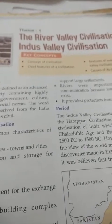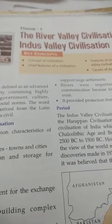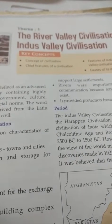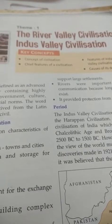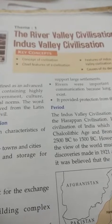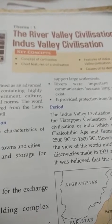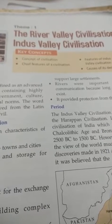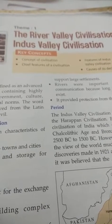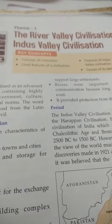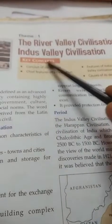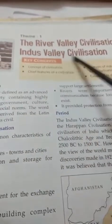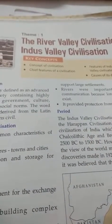You know that there are 4 ancient river valley civilizations: Chinese civilization, Egyptian civilization, Mesopotamian civilization, and Indus Valley civilization. Today we are going to read about the Indus Valley Civilization.